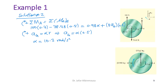For solution three, we recognize that point A is the IC — the instantaneous center of zero velocity.